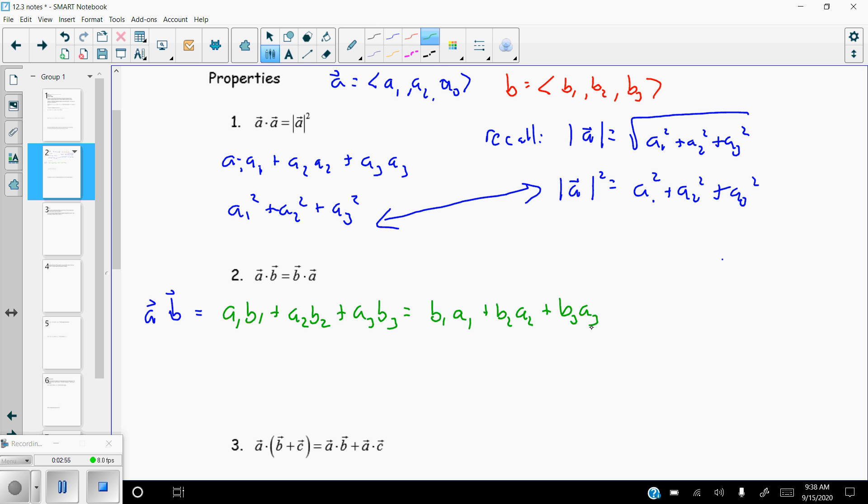And because all those things are just numbers and multiplication is commutative, I can reverse the order. a1 b1 and b1 a1, these two things are the same. So every component is the same, so really b1 a1, b2 a2, b3 a3 is just b·a. So what it says is the dot product is commutative. Order does not matter which way you dot it.